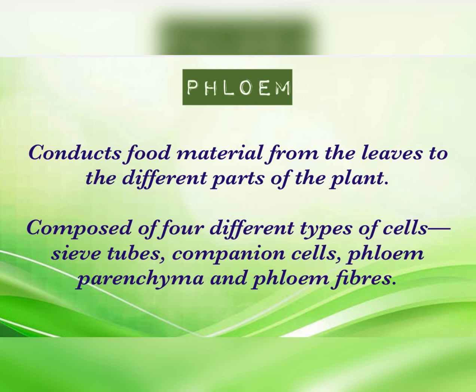Phloem is the vascular tissue which conducts food material from the leaves to different parts of the plant. It is composed of four types of cells. Sieve tubes, which don't have a nucleus, are the main conducting part of phloem.